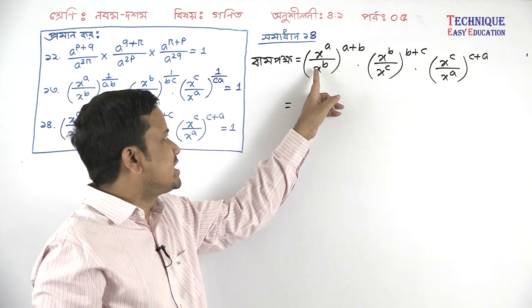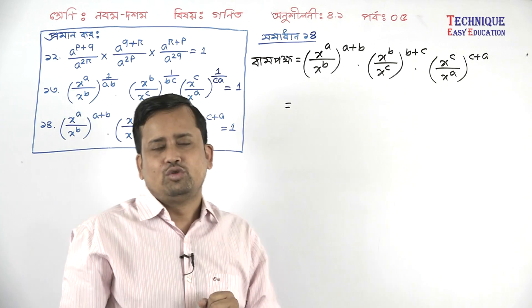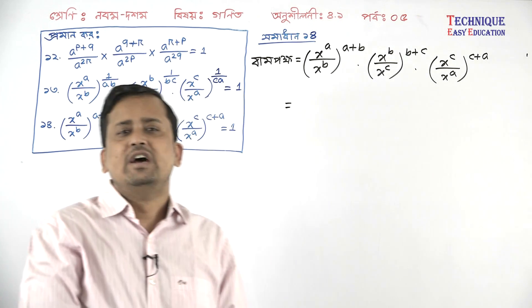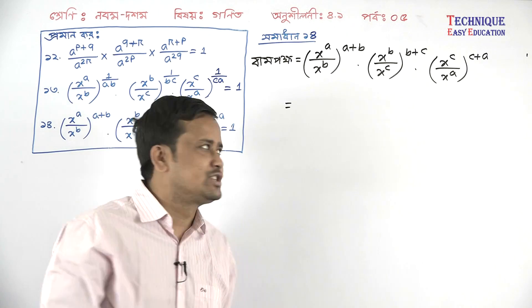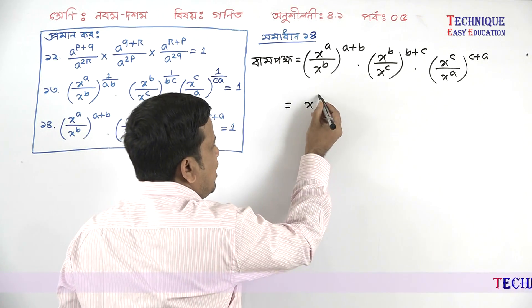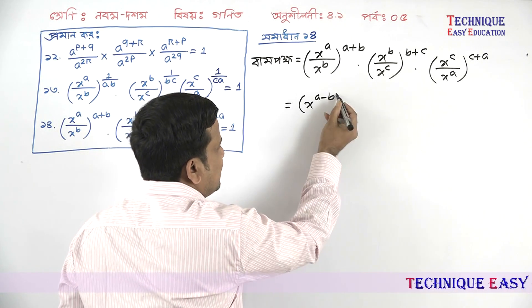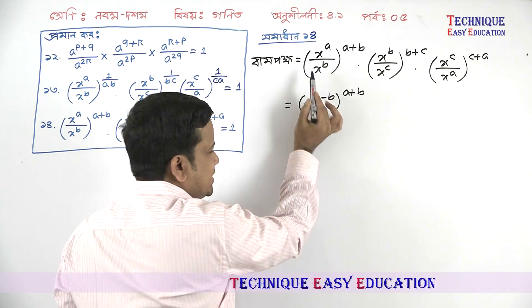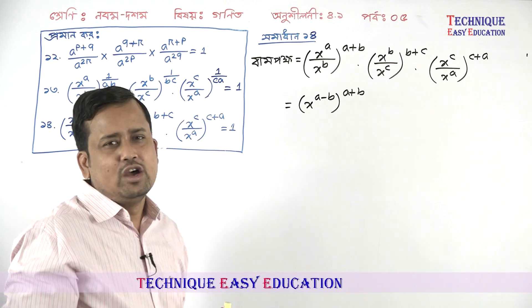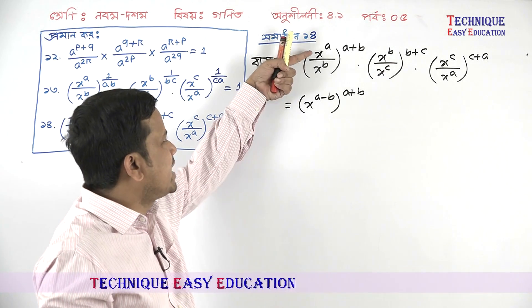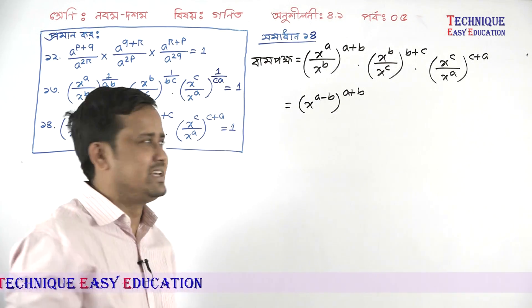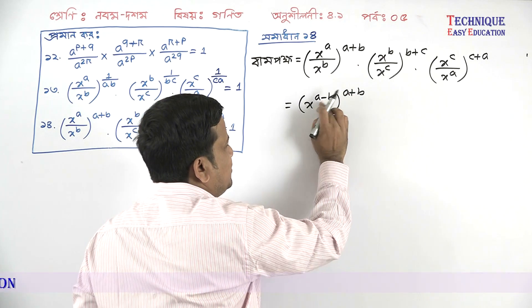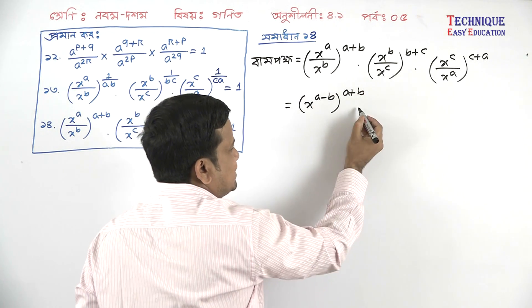Look — if we divide X to the power a by X to the power b, we get X to the power a minus b. So the power becomes a minus b. And over here, the combined power is a plus b. Similarly, dividing gives X to the power a minus b, and the pure power yields a plus b.